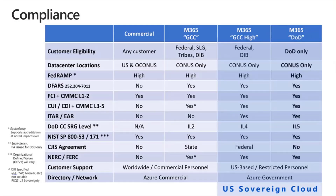On this slide, we have different sections covering compliance. We can see the different phases of governance and compliance that must be met for each government cloud. On the commercial side, it can be FedRAMPed at high, and the data center location could be U.S. or OCONUS. Across all three government clouds — GCC, GCC High, and DOD — the data center location is CONUS, meaning within the United States. Further down are the different certifications and agreements that must be applied to our government clouds to ensure compliance with regulations for each cloud.